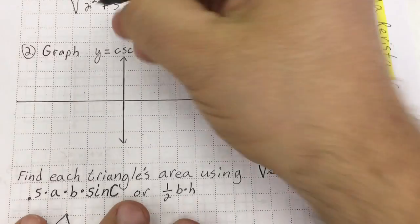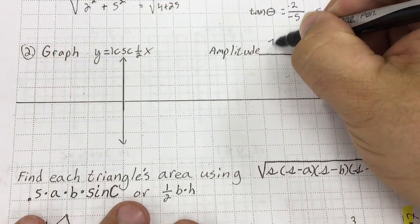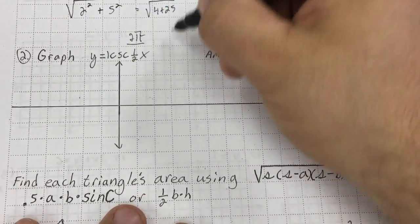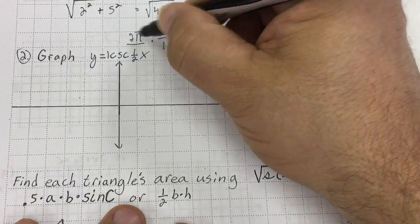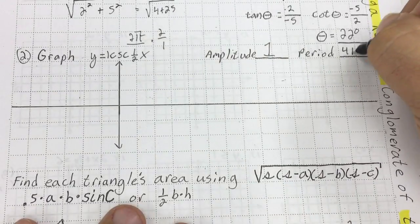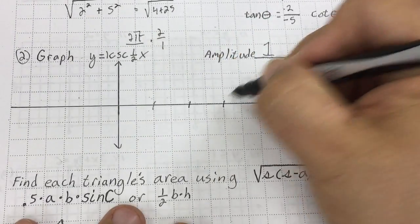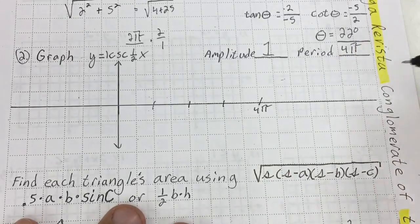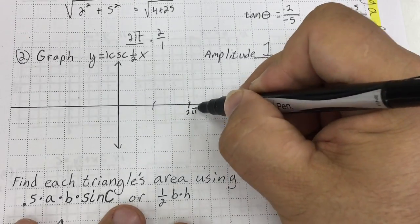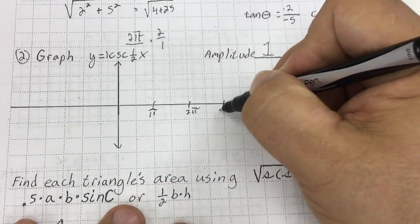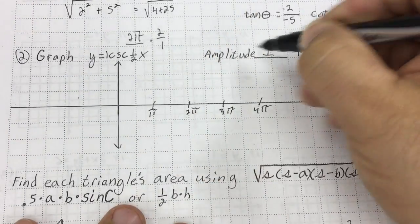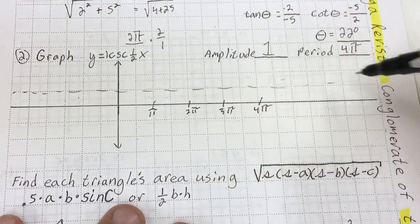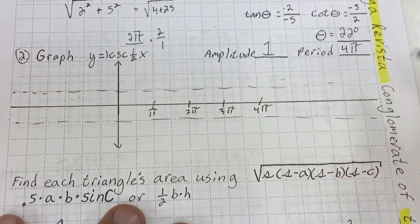Graph cosecant. There's a hidden 1 up front, so the amplitude is 1. The period is 2π divided by one half — so that's going to be 4π. I'm going to mark out to 4π. Half of 4π is 2π, half of 2π is π — so I'll mark 1π, 2π, 3π. The amplitude is 1, so I'm going to go up 1 and put a dashed line, and go down 1 and put a dashed line.